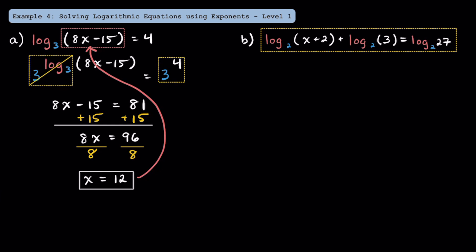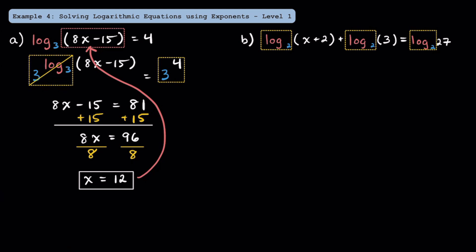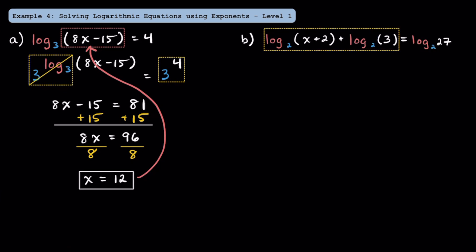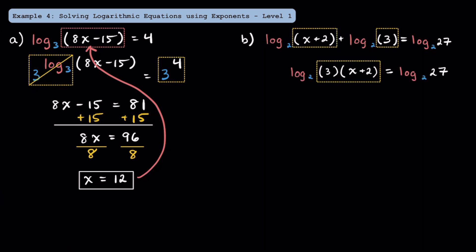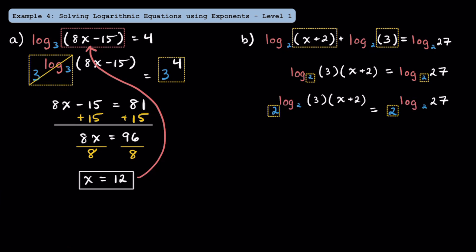Now let's look at this equation where we have log base 2 of the quantity of x plus 2 plus log base 2 of 3 is equal to log base 2 of 27. Since all the terms have log base 2, we can condense the left side and write log base 2 of 3 times the quantity of x plus 2. Whenever you're adding two logarithms with the same base, you can condense it as a product. Now let's get rid of the logarithms by exponentiating both sides with base 2, which cancels out both logs, and we're left with 3 times the quantity of x plus 2 is equal to 27.